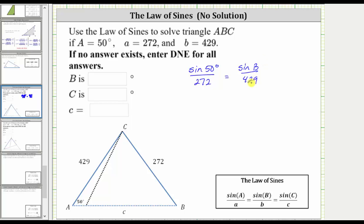Now let's solve the equation for sine B by multiplying both sides of the equation by 429. Notice on the right side, 429 divided by 429 simplifies to one, leaving us with sine B equals, on the left side we have 429 sine 50 degrees divided by 272.